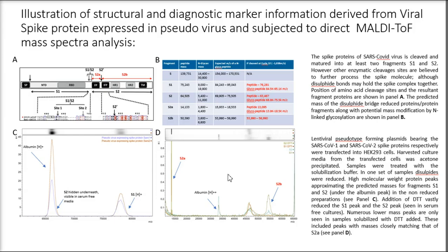Colleagues produced pseudotype viruses expressing the SARS-CoV-1 and SARS-CoV-2 spike proteins, and we were able to visualize them using our developed multi-TOFF technique. We indeed found S1 and S2 fragments.